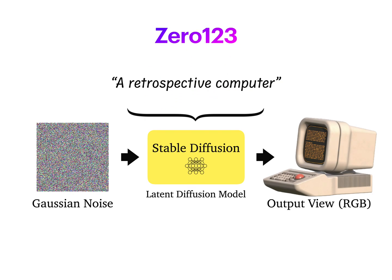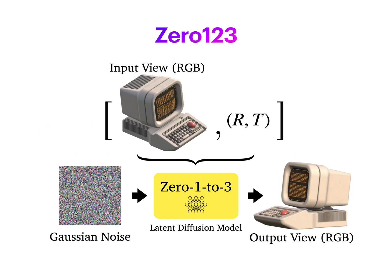Therefore, we propose 0123. The core of 0123 is a conditional latent diffusion model. We take a stable diffusion model pre-trained on an internet-scale 2D dataset and adapt it to condition on an input image of an object, as well as a relative camera transform RT, and generate the novel view specified by the input camera transform.